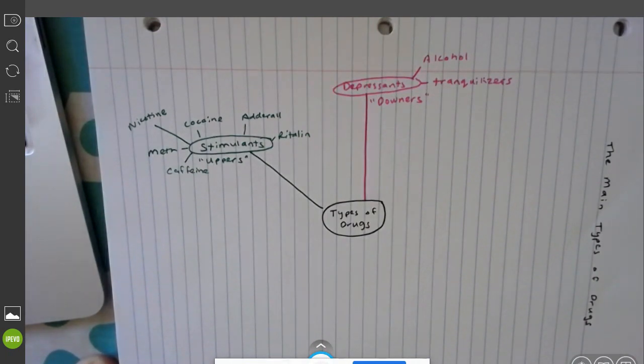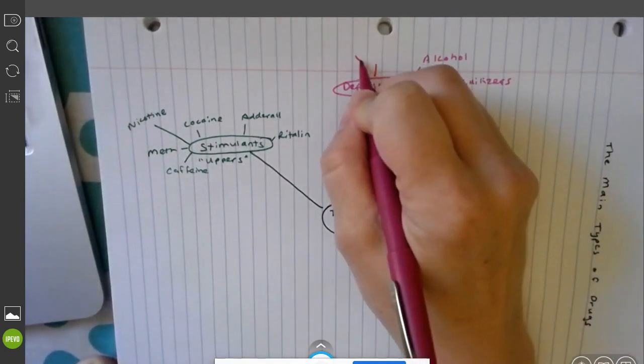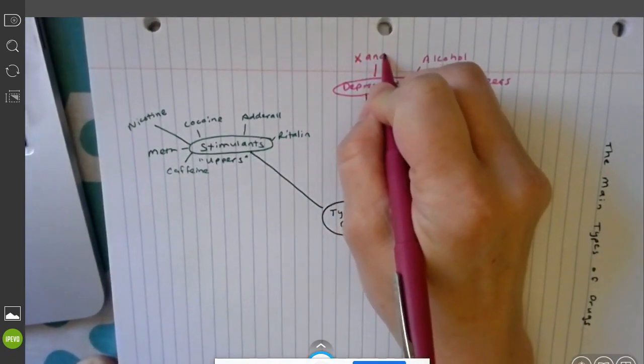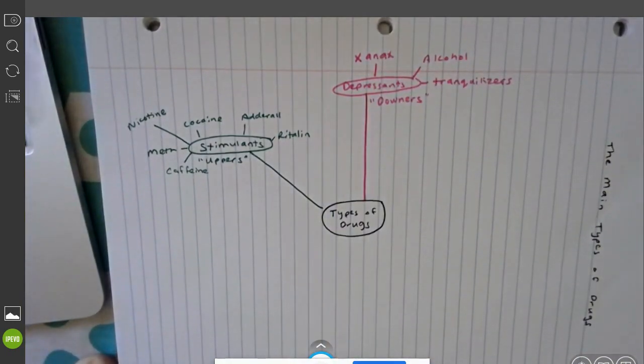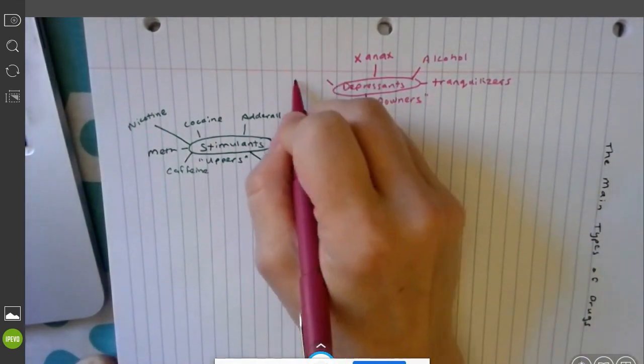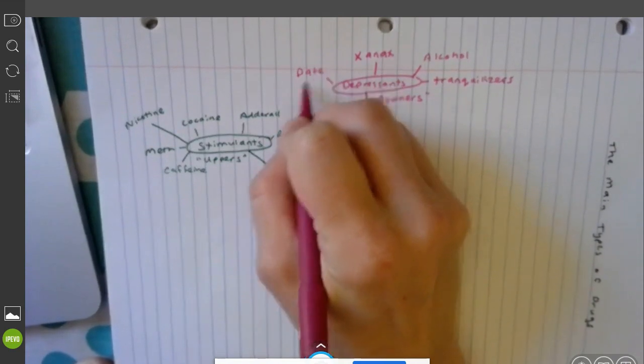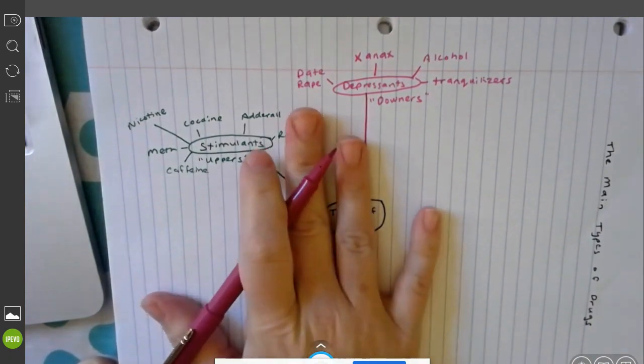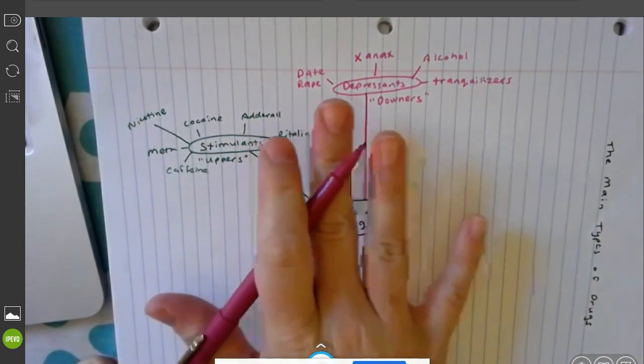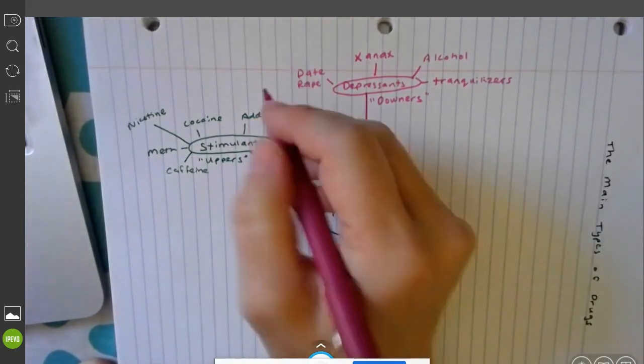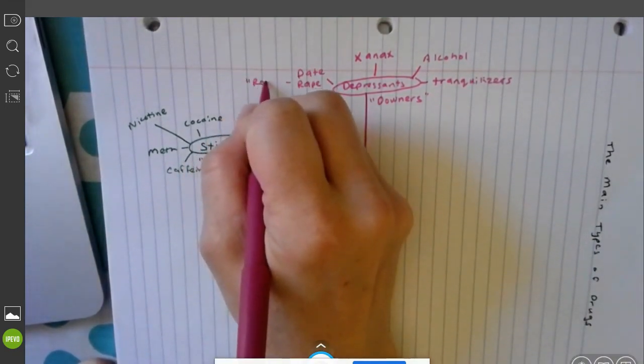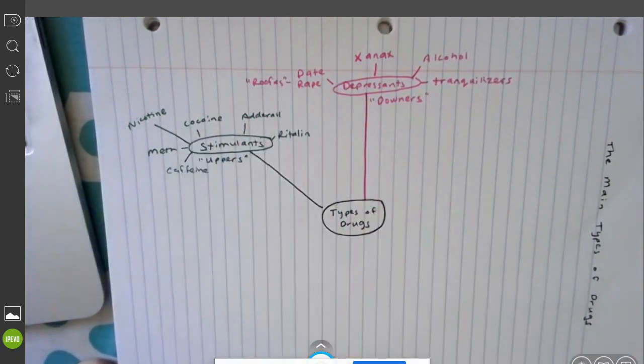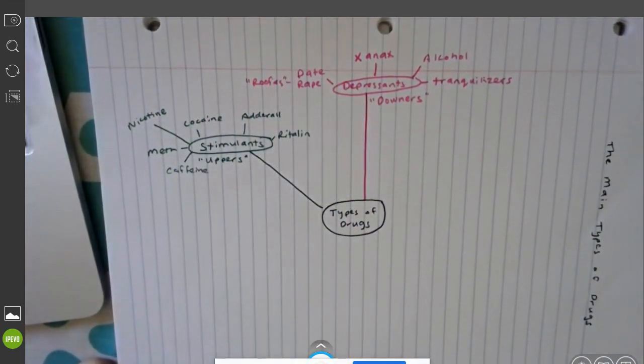Xanax, people take this, it's prescribed by some doctors for anxiety. In this category you also have your things like roofies, your date rape drugs where the rapist would slip someone a forget-me-not pill which means they completely black out and then it wipes away their short-term memory. So it's like the perfect crime for the perpetrator.